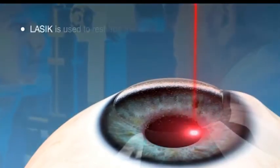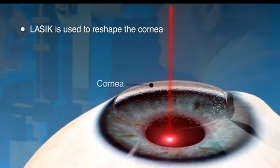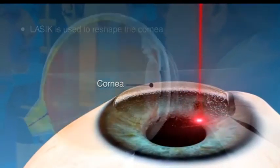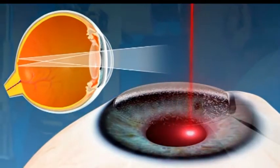LASIK is used to reshape the clear round dome at the front of your eye known as cornea, to improve the way your eye focuses light rays onto your retina.